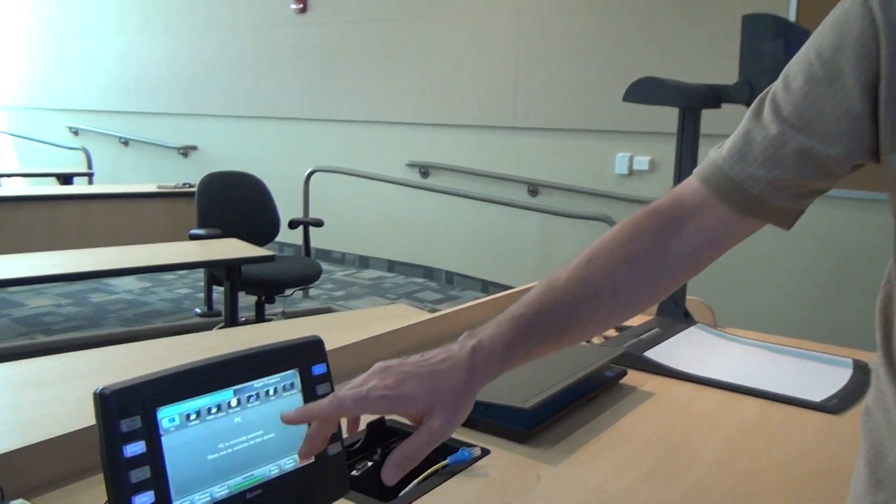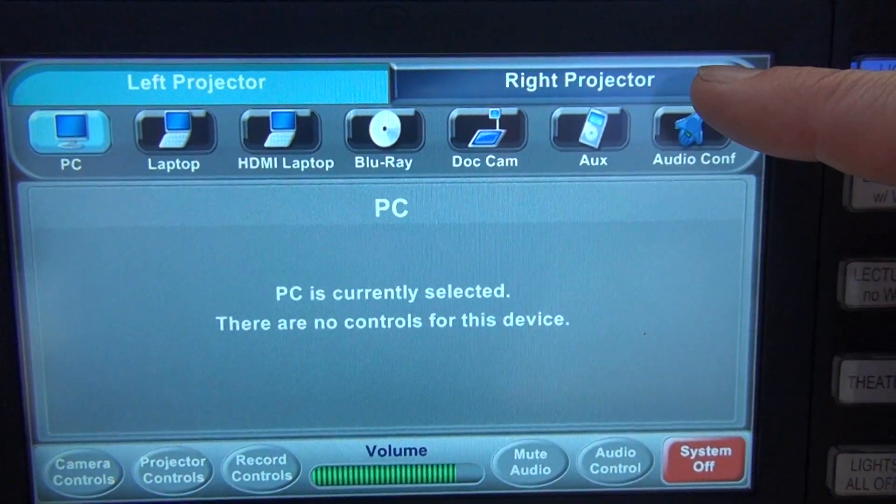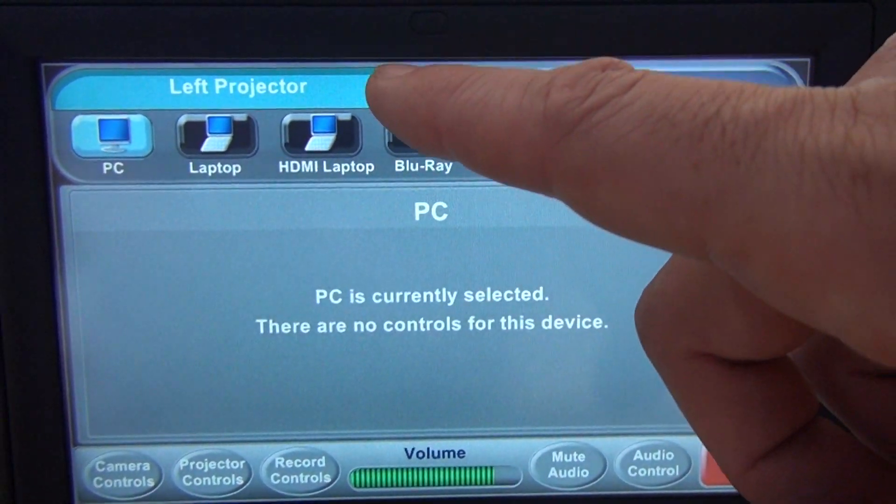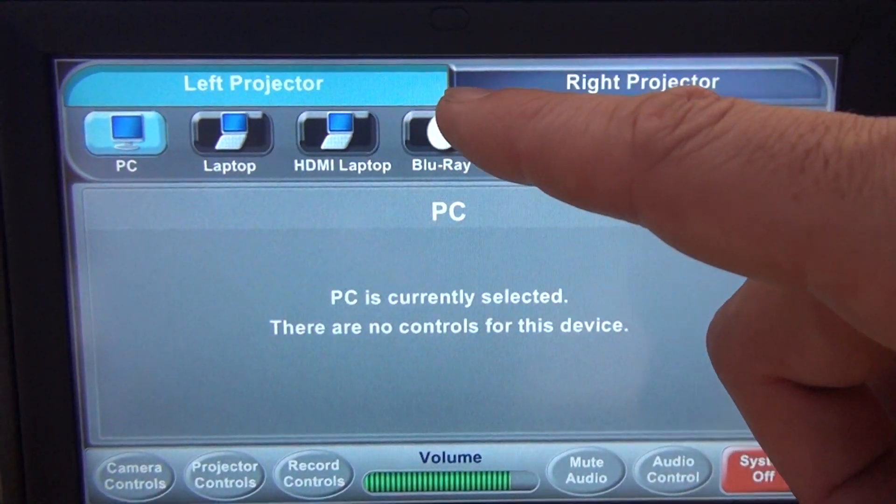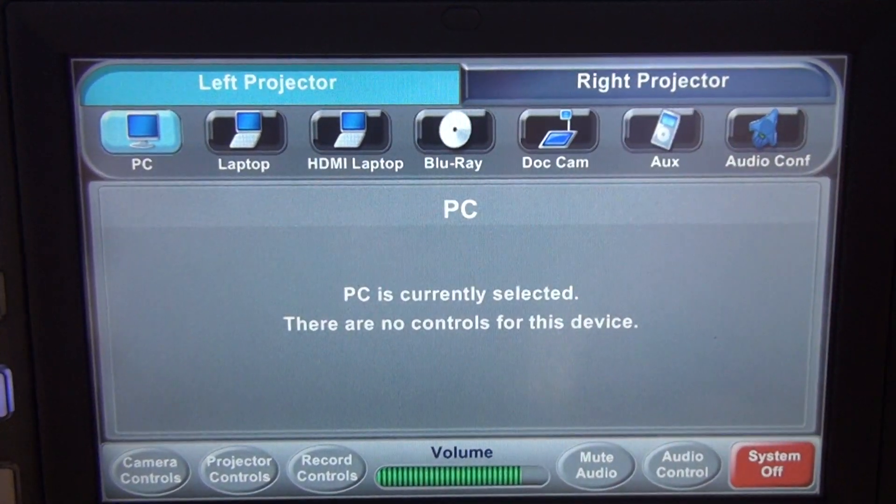So now we can talk about the main screen here on our touch panel. The first thing we'll notice is that in the very top we have two tabs, a left projector tab and a right projector tab. Right now the left projector tab is highlighted, meaning whatever we do on our source select row is what's going to be shown on the left projector.